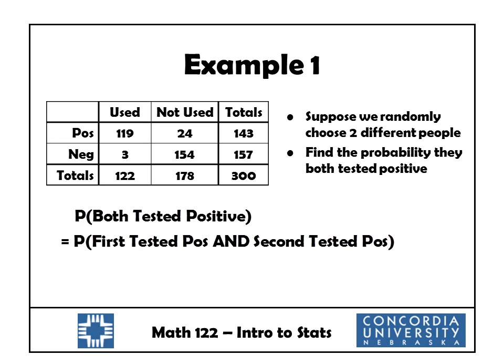The second step is to rewrite that in terms we know how to work with — specifically ands or ors. If they both tested positive, that means the first tested positive and the second tested positive. We see the word 'and' there, which makes us think multiplication rule. So I have to calculate the probability that the first tested positive. When I choose that first person, I have 300 to choose from, and a total of 143 of them tested positive. So by rule 1, that probability is 143 divided by 300.